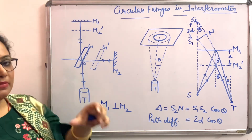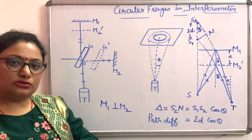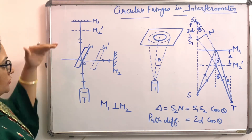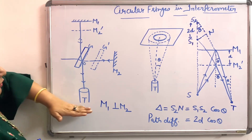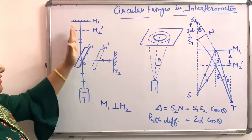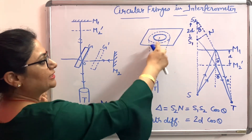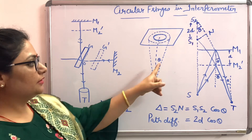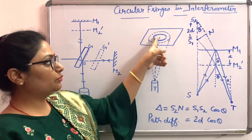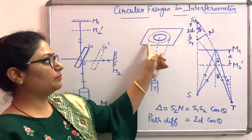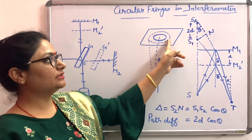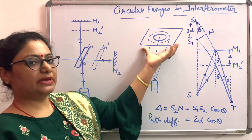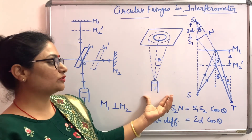When M1 and M2 are exactly perpendicular, M1 and M2 dash are exactly parallel, acting as a parallel thin film. For a parallel thin film, fringes are a locus of all points of equal inclination. Viewing through the telescope, the locus of all points equally inclined to the telescope axis in mirror M1 forms a circle. Hence, circular fringes are observed through the telescope.